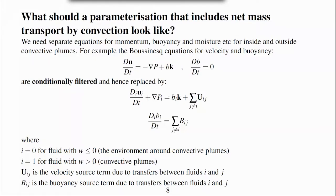What should a parameterization that includes net mass transport by convection look like? I propose that it should solve separate equations for prognostic variables in separately defined fluids. These fluids could represent for example convective plumes where i equals 1 in updrafts or plumes.